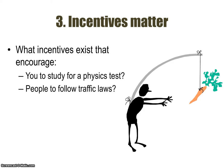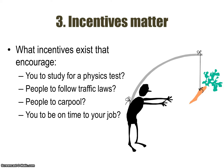The incentives that exist to get people to follow traffic laws — you don't want to get a speeding ticket. That's an example of a negative incentive: you don't want something to happen, therefore you will act in a certain way. People want to save money on gas, save the environment, or use the carpool lane to get to work faster, so they will carpool. The incentive to be on time to your job is that you want to keep your job and keep earning money.